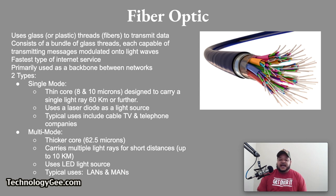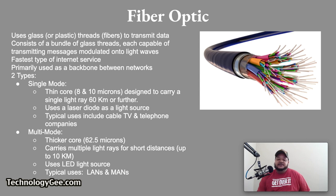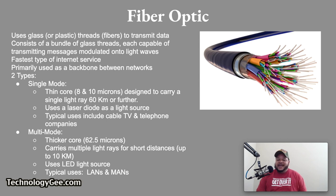Fiber optic cable comes in two major types. You have single mode, which has a thin core between 8 and 10 microns in length, designed to carry a single light ray long distances up to 60 kilometers or further. Single mode cable uses a laser diode as a light source, and typical uses include cable TV and television companies. Then you have multi-mode, which has a thicker core of 62.5 microns, carries multiple light rays for short distances up to 10 kilometers, uses an LED light source, and typical uses include local and metropolitan area networks, also known as LANs and MANs.